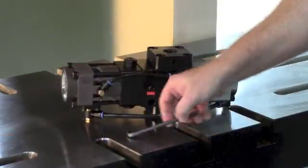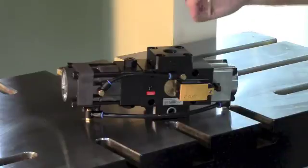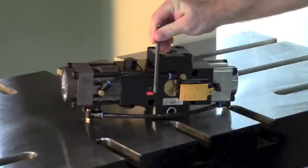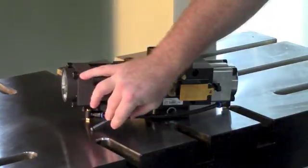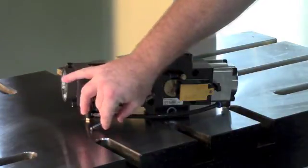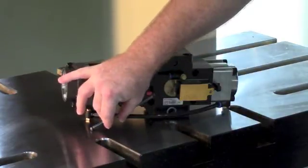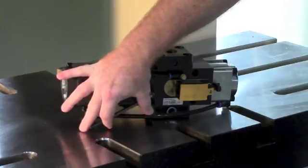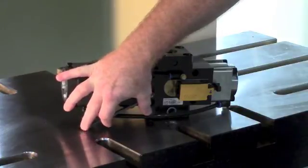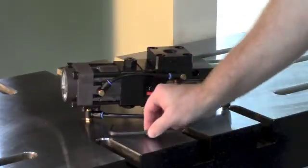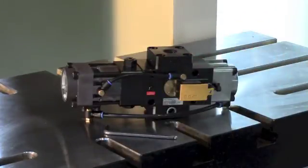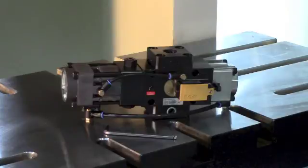To bleed the pump, you will take a metric allen wrench anywhere from four to six millimeter. Put it in the screw counterclockwise. Open it up. You should see some air and oil start to seeping out around the set screw. Once that is done, you simply tighten it back up and let the pump continue its pressurization process.